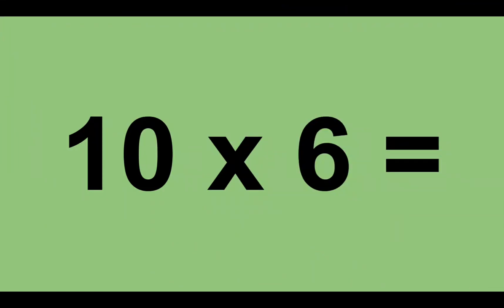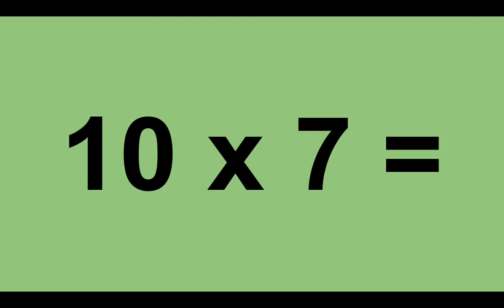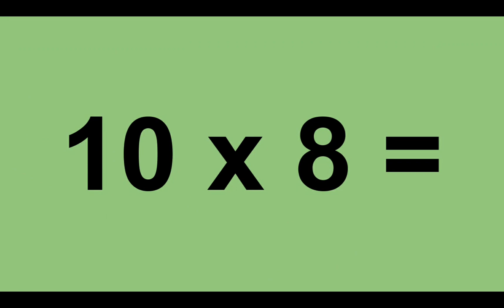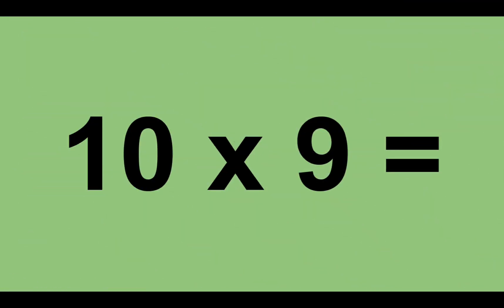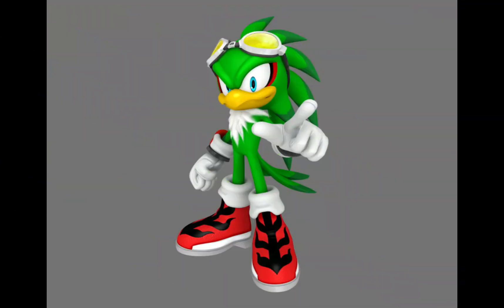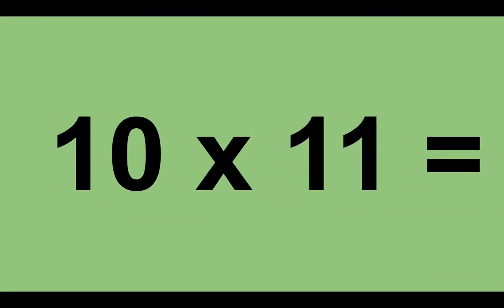Ten times six equals sixty. Ten times seven equals seventy. Ten times eight equals eighty. Ten times nine equals ninety. Ten times ten equals one hundred. Ten times eleven equals one hundred and ten. Ten times twelve equals one hundred and twenty.